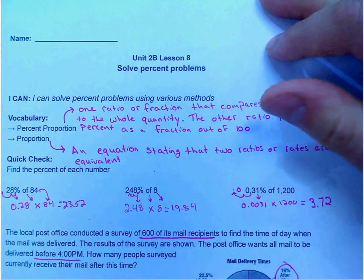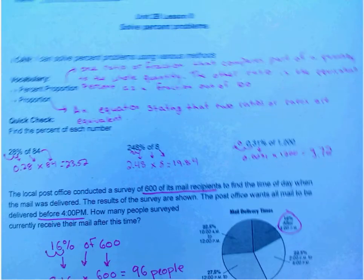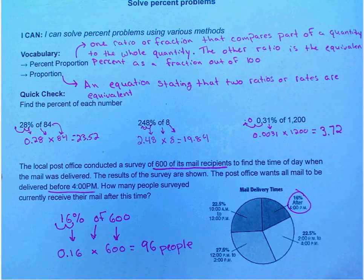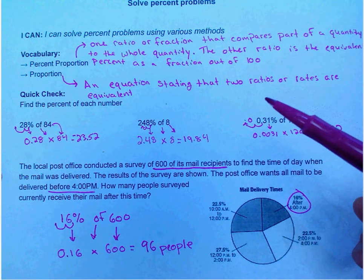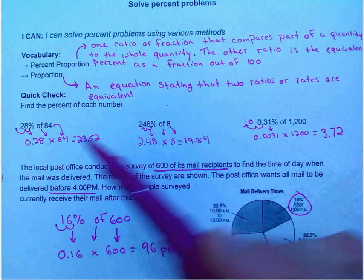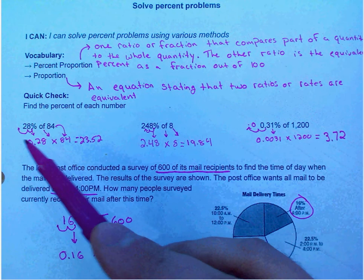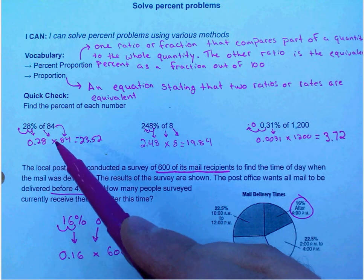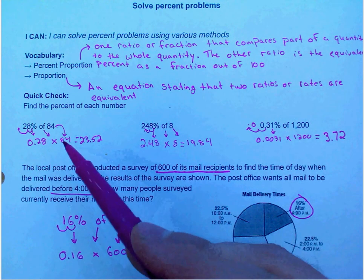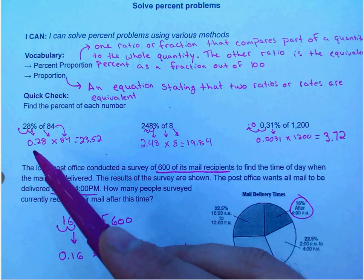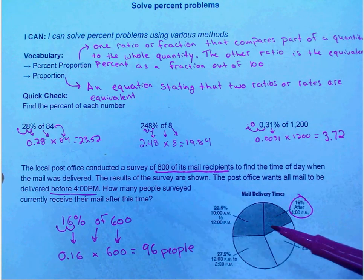All right, let's take a look. The process is always the same. Change the percent to a decimal, of to a multiplication sign, and then multiply across. So we have 28 hundredths times 84 is 23.52.